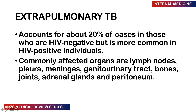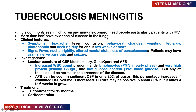Extra-pulmonary TB accounts for 20% of cases in HIV-negative patients but is much more common in HIV-positive individuals. It commonly affects the lymph nodes, pleura, meninges, genitourinary system, bones, adrenals, and peritoneum. TB meningitis is common in children, immunocompromised individuals, and those living with HIV. More than half will have evidence of lung disease. Features include headache, fever, confusion, behavioral change, vomiting, lethargy, photophobia, and neck rigidity lasting two weeks or more.